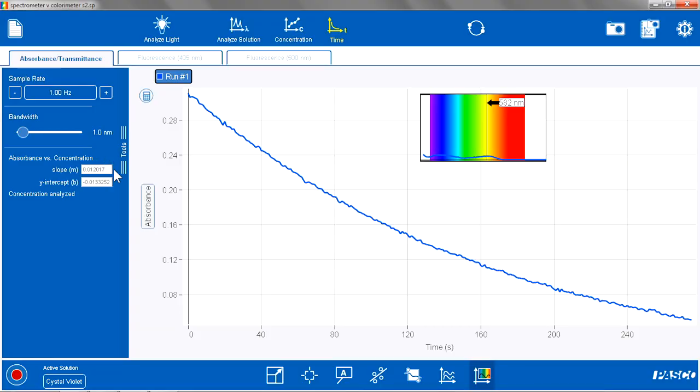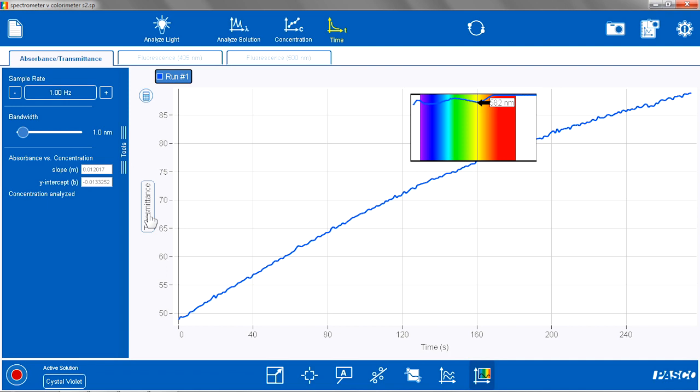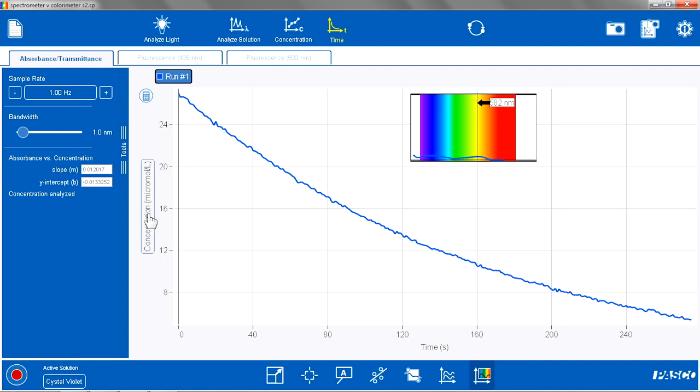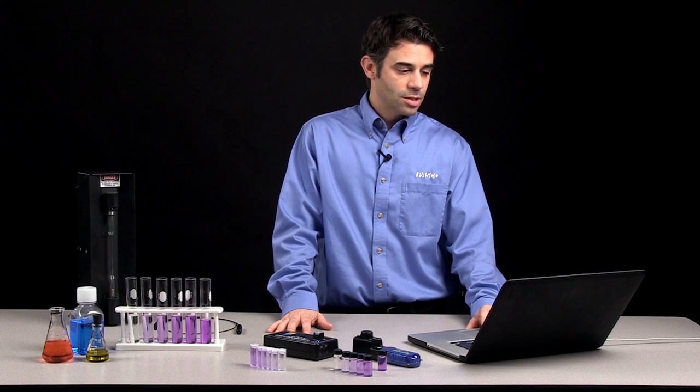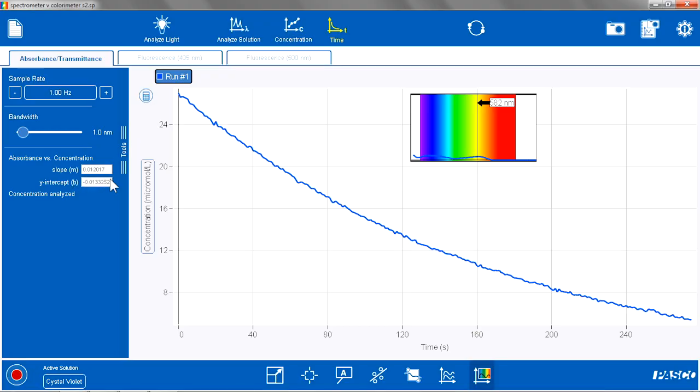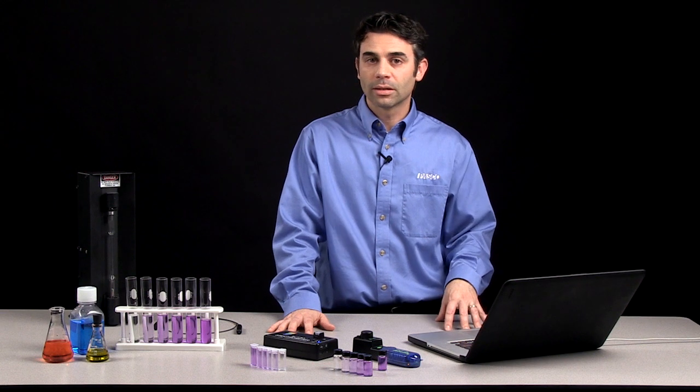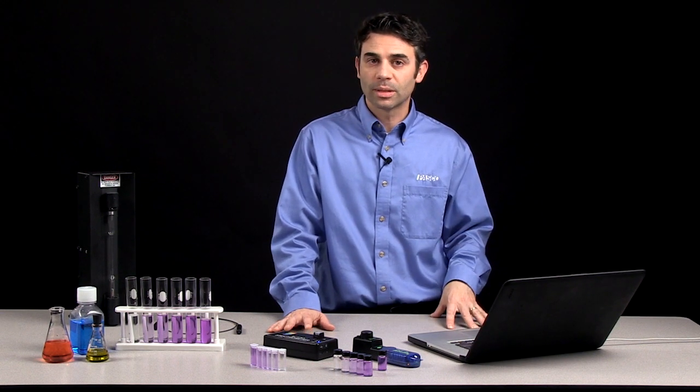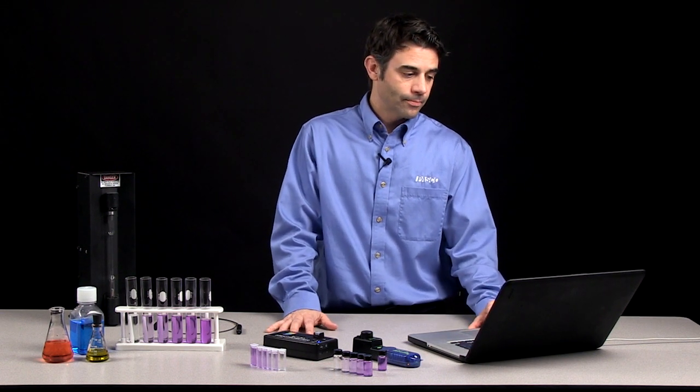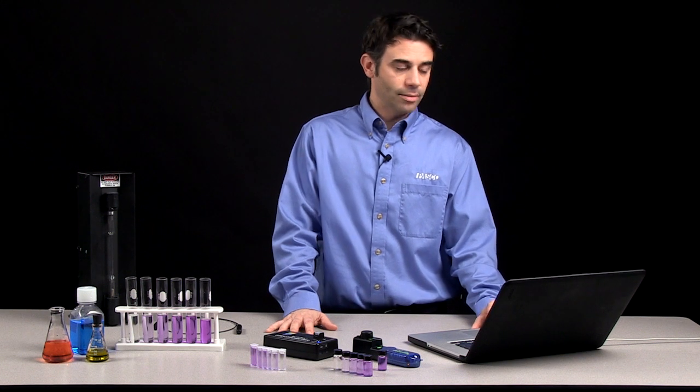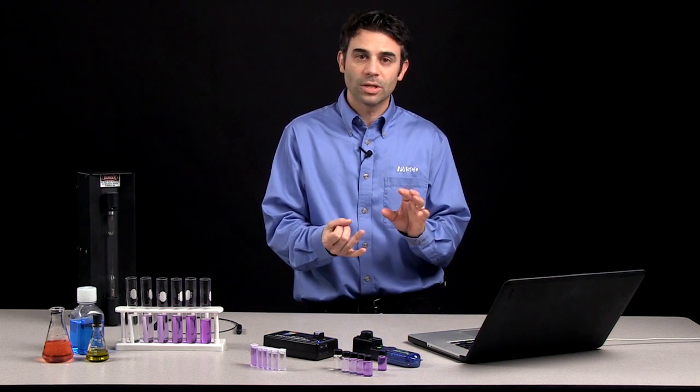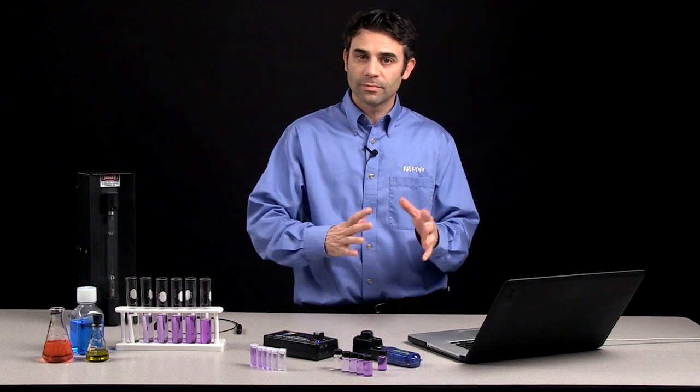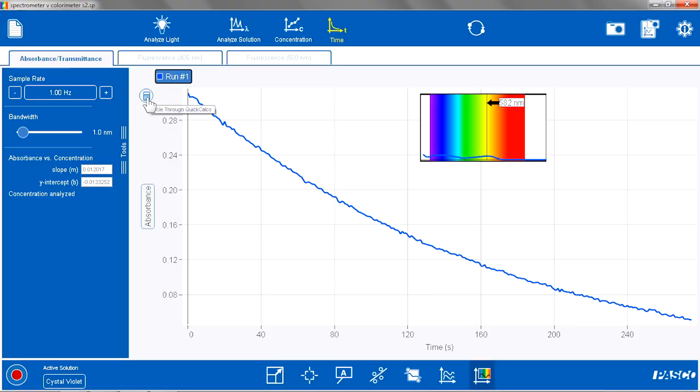The nice thing about the spectrometer is I could view this as absorbance versus time, easily as transmittance versus time, or as concentration versus time. And the reason I can do that is because the spectrometry software calculates the concentration based on the slope and intercept from that concentration experiment page. So now, once again, I want to be able to study or relate absorbance or concentration, natural log and inverse very easily. And the spectrometry software allows me to do that too.